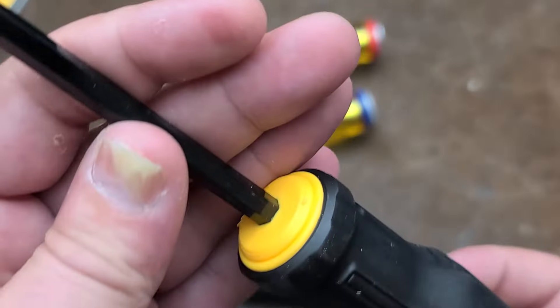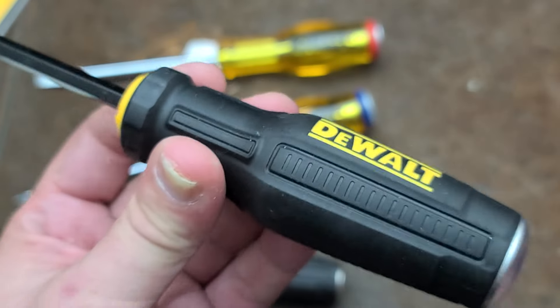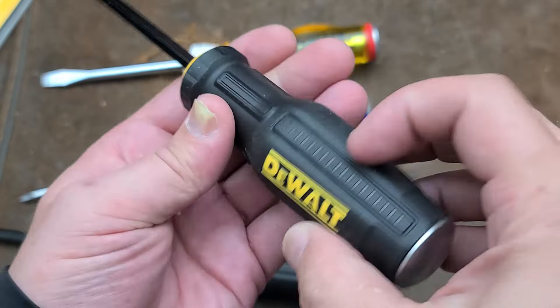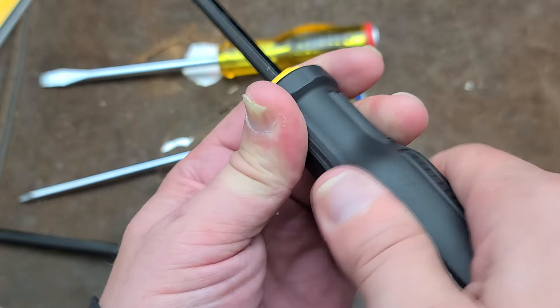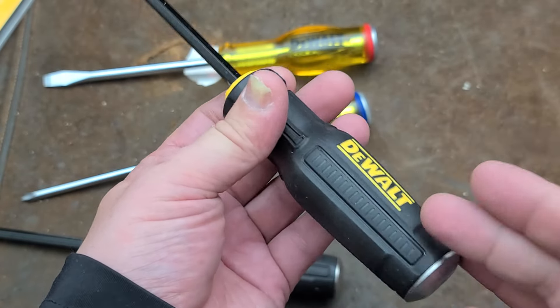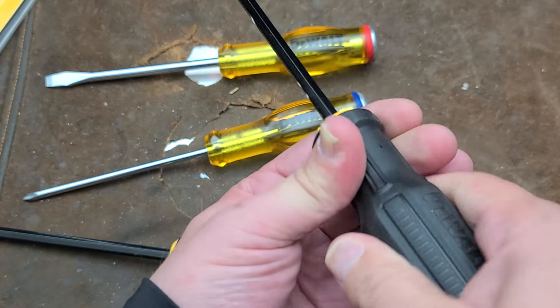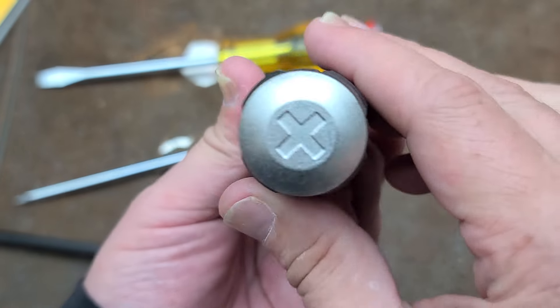These are double injected nylon handles on the new one, so we got nylon core and then like a TPU, kind of rubberized overcoating. They have kind of a square-ish design, but I think if your hands were real slick, maybe covered with dirt, grease, oil, or they're sweaty, you might have just a little bit more of an issue maintaining a grip.